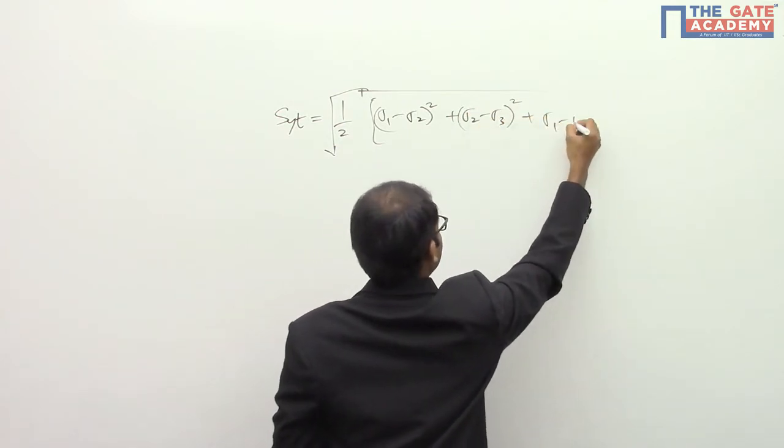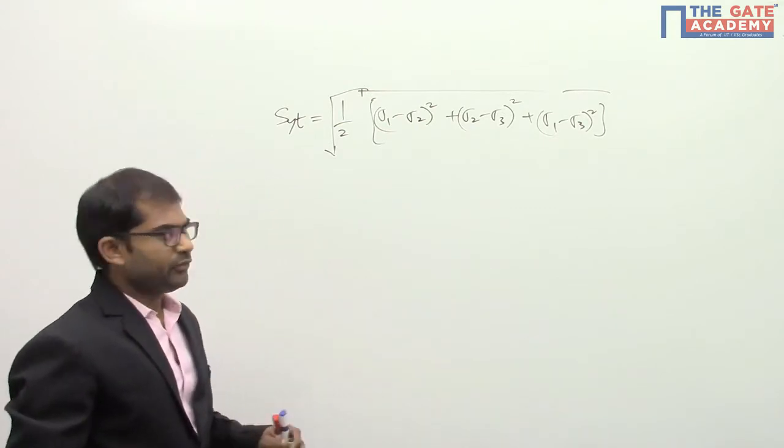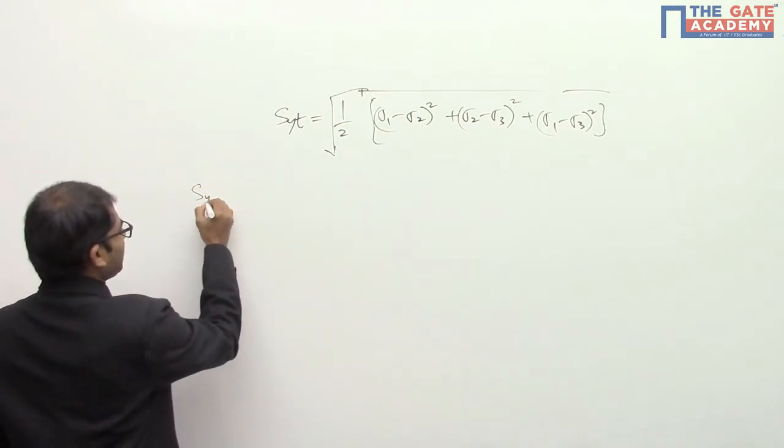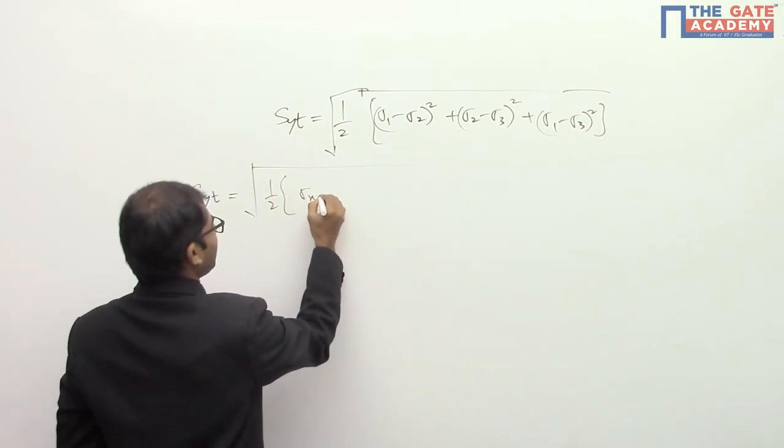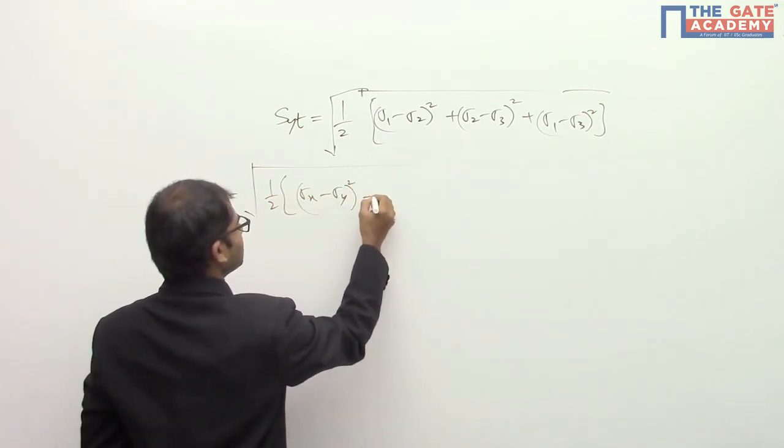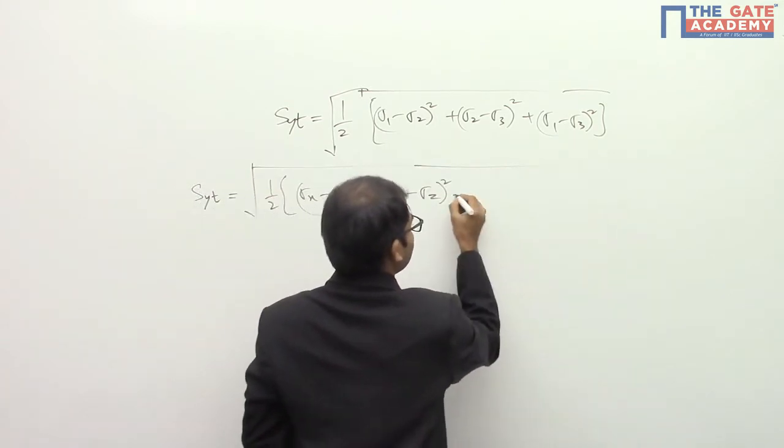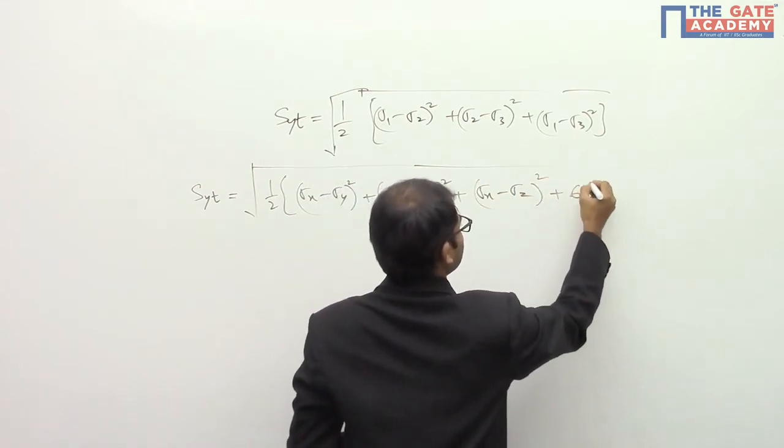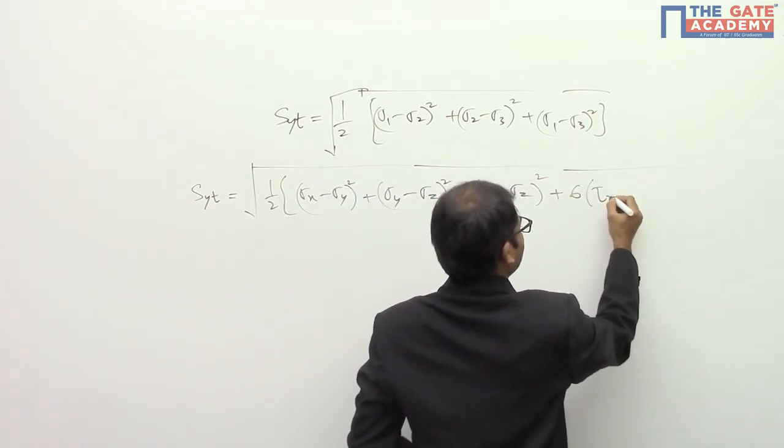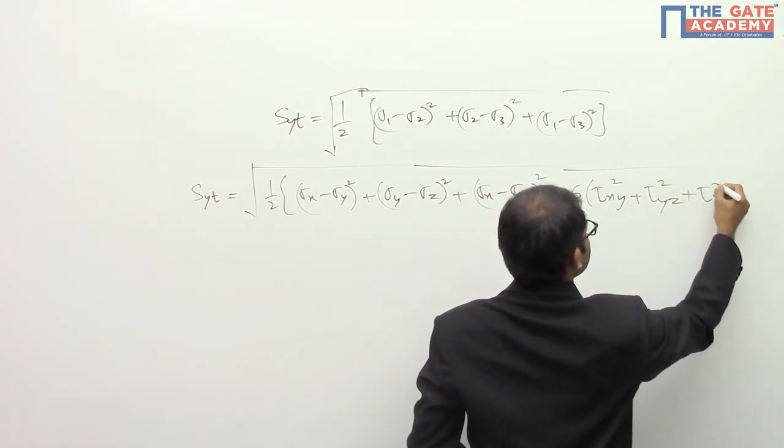Plus (sigma_1 - sigma_3)². If you are writing in terms of stress components, it will come as Syt equals square root of half of [(sigma_x - sigma_y)² + (sigma_y - sigma_z)² + (sigma_x - sigma_z)² + 6(tau_xy² + tau_yz² + tau_xz²)].